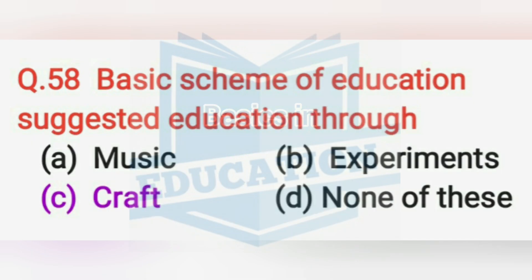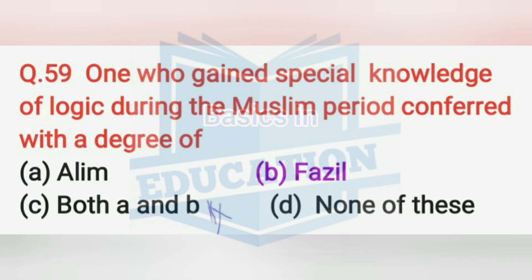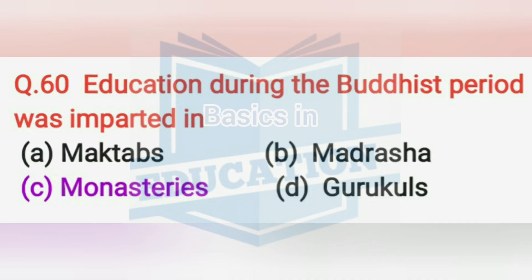The Basic Scheme of Education, i.e., the Wardha Scheme, suggested education through craft. One who gained special knowledge of logic during the Muslim period was conferred with the degree of Fazil. Education during the Buddhist period was imparted in monasteries.